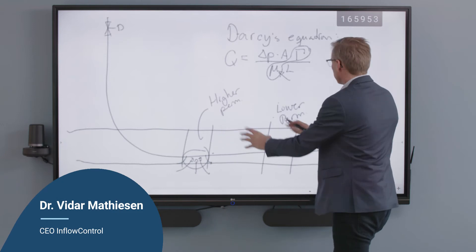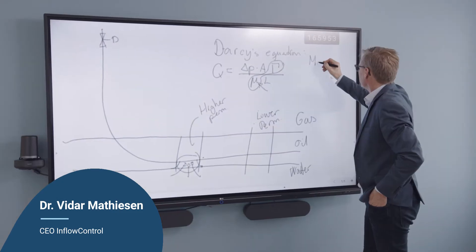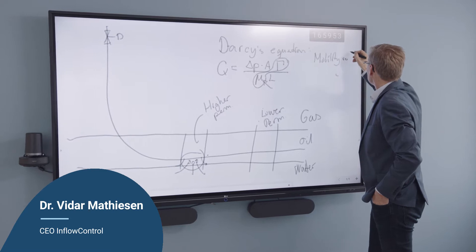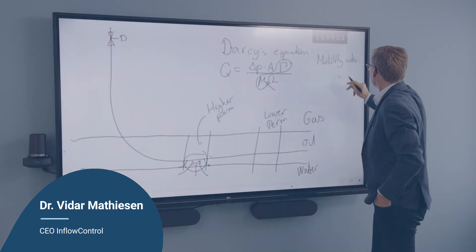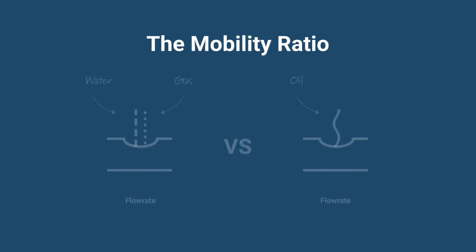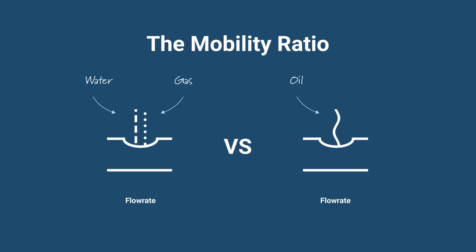In order to quantify this, most people are looking at the mobility ratio. This is telling us why you will see a very high water cut at the surface. The mobility ratio is defined as the fluid mobility of either water or gas divided by the fluid mobility of oil. The ratio between them gives us an understanding of the amount of water or gas that will be produced in a reservoir compared to that of oil.